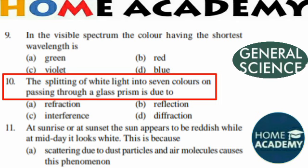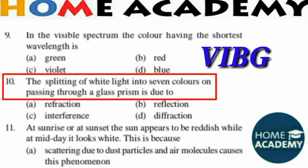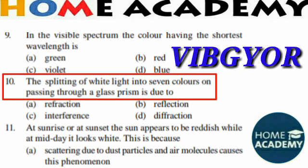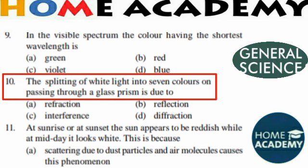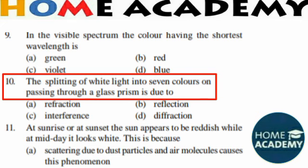When white light or sunlight passes through a prism, it breaks into seven constituent colors: violet, indigo, blue, green, yellow, orange, and red. This band is called the spectrum. The deviation is maximum for violet color and least for red color. This phenomenon occurs because of refraction of light.